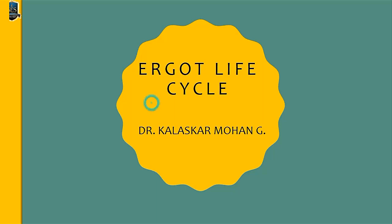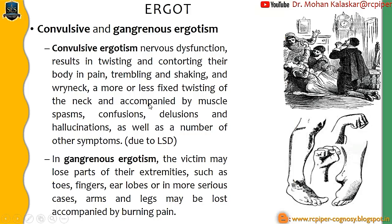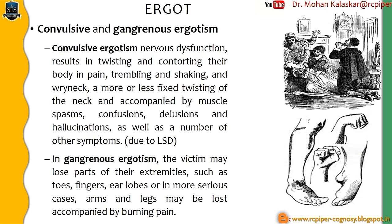We are going to start with Ergot. Ergot is an alkaloid-containing material and is the only example from a lower organism, that is from fungi. The only fungus containing alkaloids is Ergot. Ergot was very badly notorious in the mid-time in Europe because of its endemic spread of certain effects of Ergot.